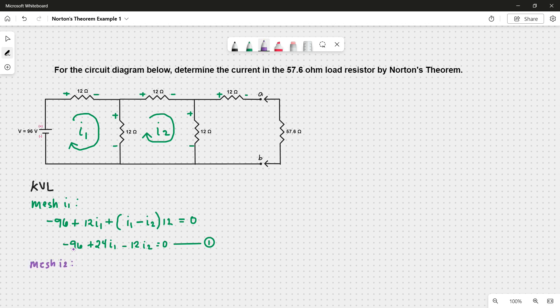This is now our first equation. In the second mesh I2, we have, again, I2 minus I1 multiplied by 12 plus, entering the positive side, so we have 12I2, and lastly, another 12I2 for this resistor, all equal to zero. Simplify, and this is now our second equation.